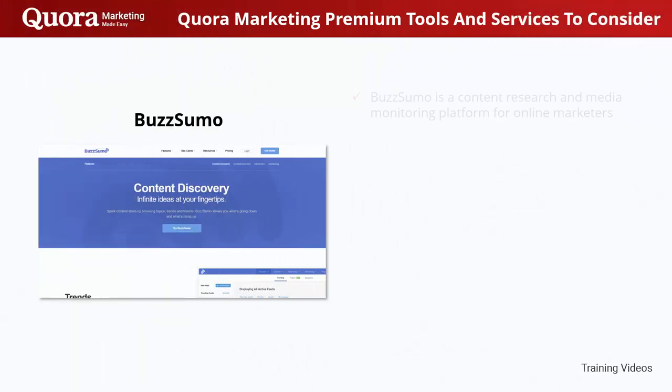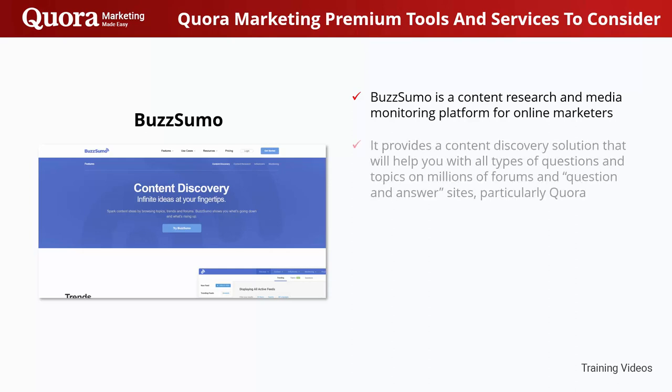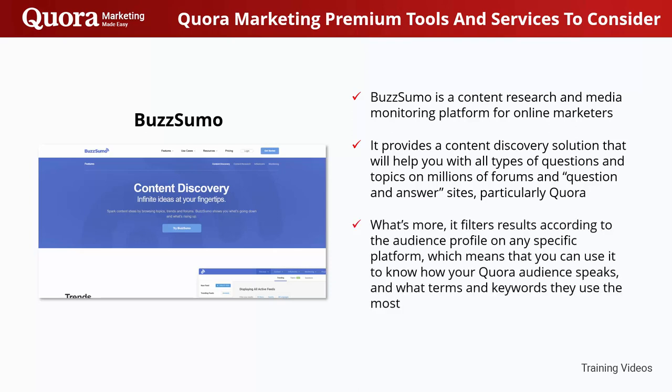BuzzSumo is a content research and media monitoring platform for online marketers. It provides a content discovery solution that will help you with all types of questions and topics on millions of forums and question-and-answer sites, particularly Quora. What's more, it filters results according to the audience profile at any specific platform, which means you can use it to know how your Quora audience speaks and what terms and keywords they use the most.